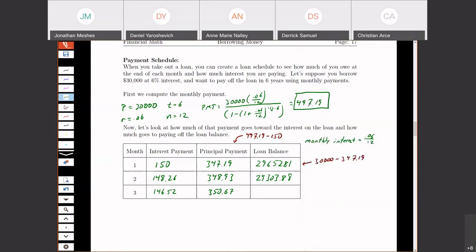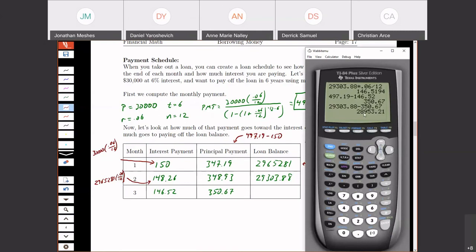So the initial 150, that was our $30,000 times the interest rate, 0.06 divided by 12, because that's our monthly interest rate. And for the second one, it's the same thing, except we don't use $30,000 anymore, we use the previous loan's balance. So then our last balance is $28,953.21.